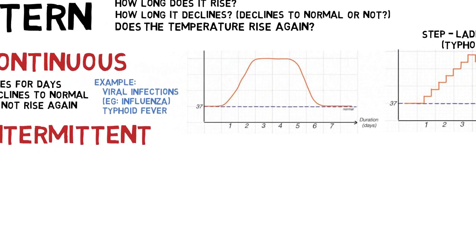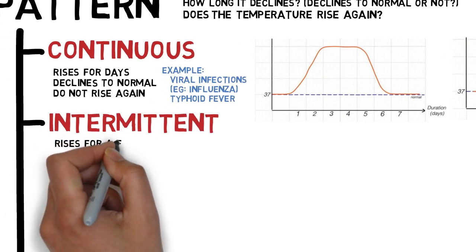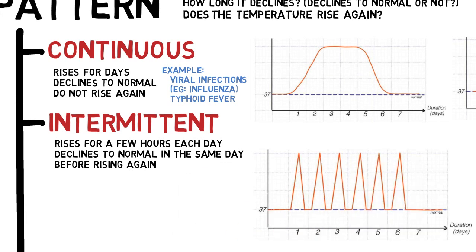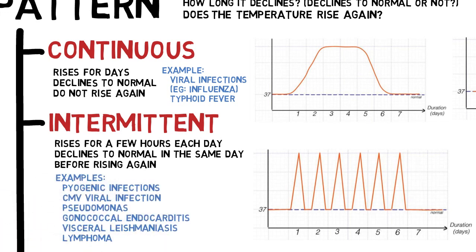For typhoid fever specifically, it is not only persistent but also has a distinguished pattern called the step-ladder pattern, which some authors classify as a different type. Next is intermittent fever, where temperature rises for a few hours each day before declining back to normal in the same day, and may rise again within the same day or the next. Most pyogenic bacterial infections show this pattern, as do cytomegalovirus infection, lymphoma, pseudomonas infection, gonococcal infection and leishmaniasis.